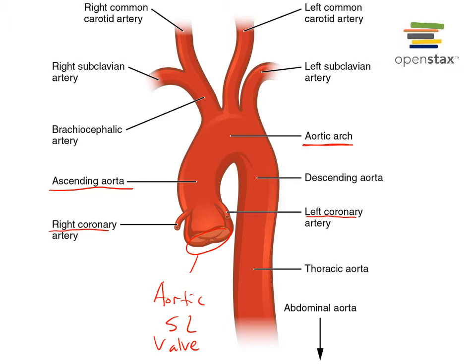There are three major branches coming off the aortic arch. The first is the brachiocephalic artery, also known as the brachiocephalic trunk. 'Brachium' means arm and 'cephalic' means head, so it carries blood towards the right arm and the right half of the head. It branches into the right subclavian artery and the right common carotid artery. The next two branches directly off the aortic arch are the left common carotid artery, carrying blood to the left half of the head, and the left subclavian artery, carrying blood towards the left arm.